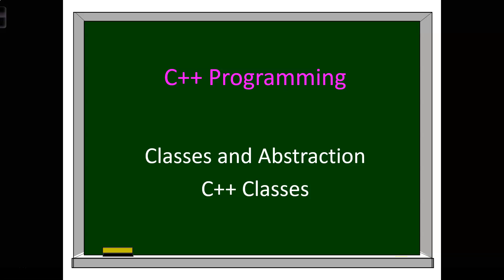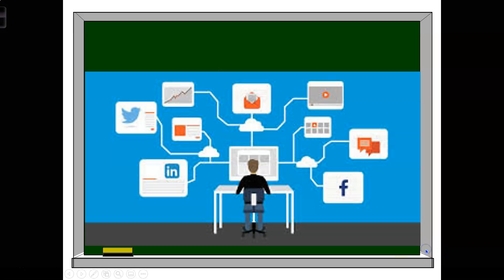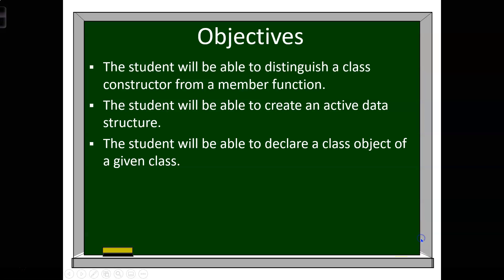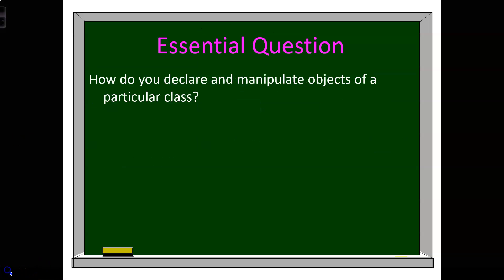In C++ programming today we're going to talk about C++ classes. The objectives: the student will be able to distinguish a class constructor from a member function, create an active data structure, and declare a class object of a given class. The essential question: how do you declare and manipulate objects of a particular class?